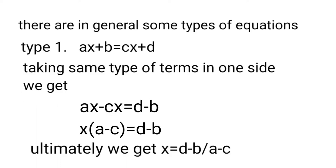There are in general some types of equations. Type 1: ax + b = cx + d. Transposing the same type of terms to one side, we get x into (a - c) equals (d - b). This can be used as a formula, and ultimately we get x equals (d - b) upon (a - c).